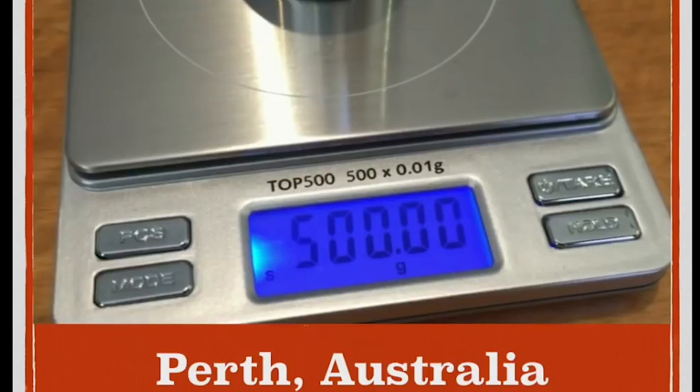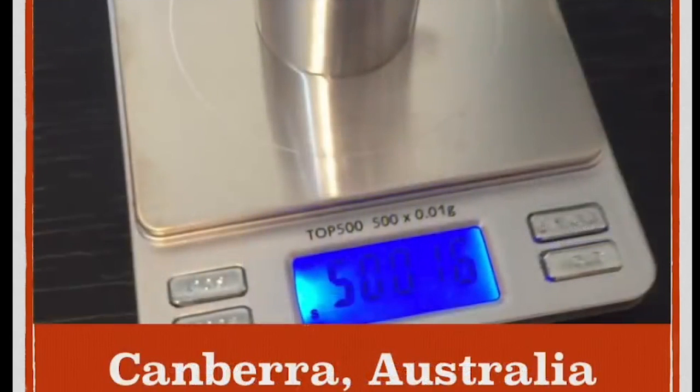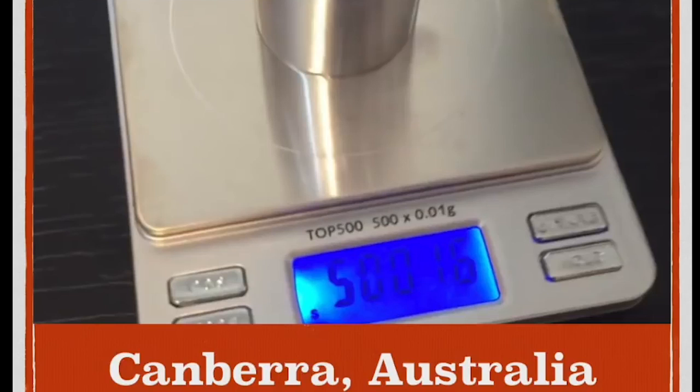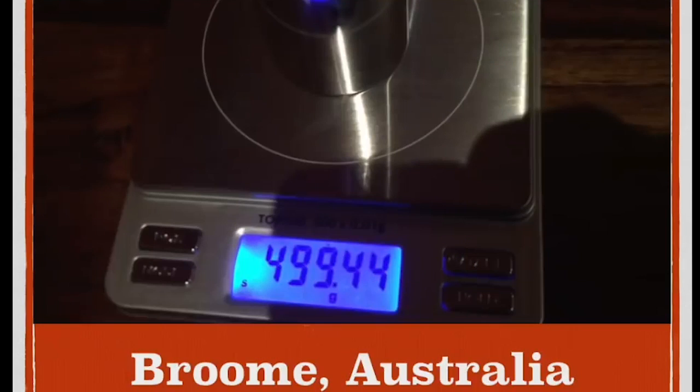Now here we have a 500 gram reference mass on a very sensitive scale in Perth, Australia 32 south latitude. Now if we take this same scale and reference mass further away from the equator to Canberra, Australia at 35 south latitude, we find it weighs 0.16 grams more.